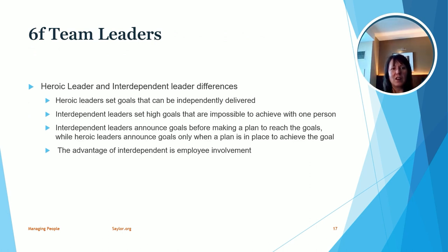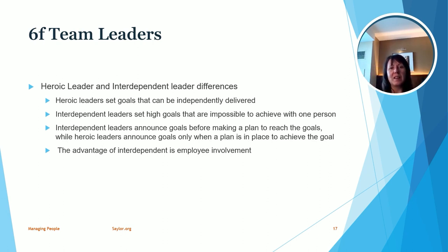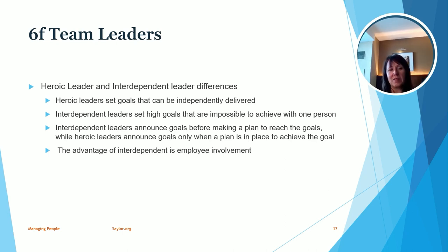One of the last topics we look at is heroic leaders versus interdependent leaders. A heroic leader tends to set goals they think can be independently delivered — they have a big goal and divide out all the smaller pieces for the team to execute. An interdependent leader, however, works with their team to figure out how they'll actually achieve the high-level goals. Another difference is that interdependent leaders announce goals before making the plan, which gets a lot of buy-in from employees. This employee involvement can be much more motivating to teams.